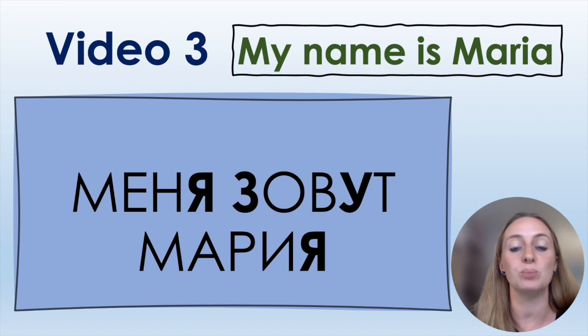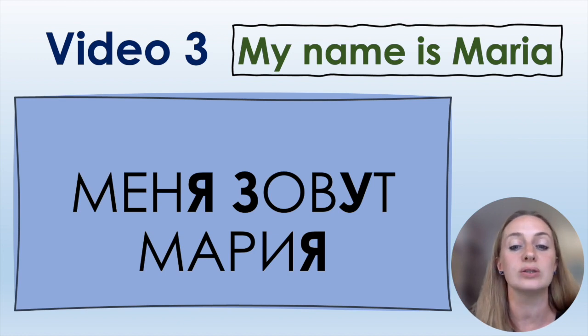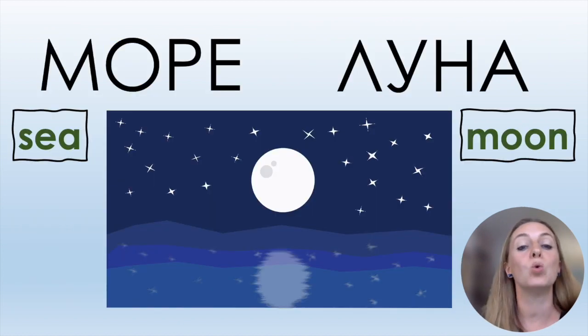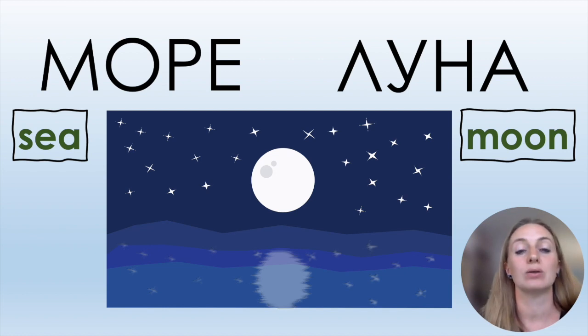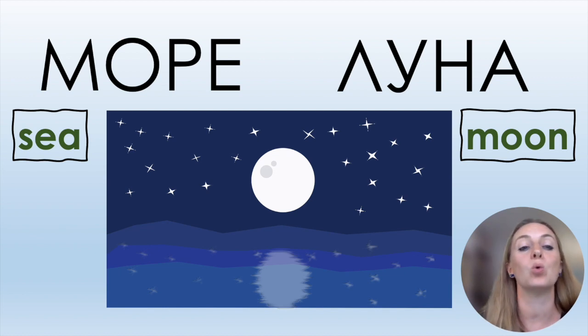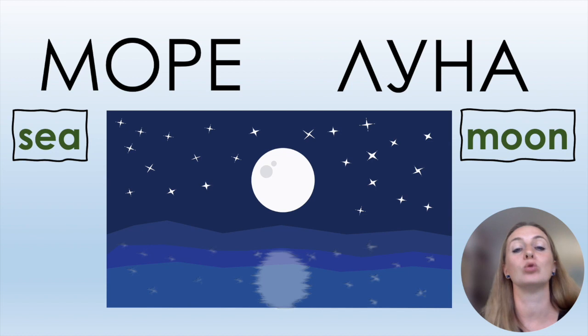Let's read more words with the letters we've already studied in videos 1, 2, and the 3 new letters. Repeat after me: Море, море. Луна, луна. Море, луна.